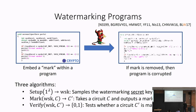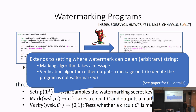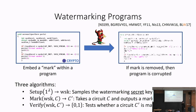Right now, everything is defined in a simple Boolean setting — either a program is considered to be marked or unmarked. The circuits C and C prime must compute the same function. You're not looking at the code to see the watermark — you test the behavior of the program using input-output behavior.